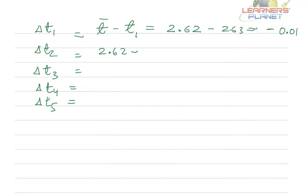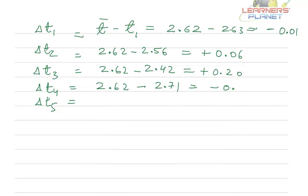Similarly, 2.62 minus the second value was 2.56. So, this value is plus 0.06. The third value is 2.62 minus 2.42. So, this value will be plus 0.20. Fourth value is 2.62 minus 2.71 which is equal to minus 0.09. And the fifth value is 2.62 minus 2.80 which is equal to minus 0.18. These are the absolute errors in individual observations.